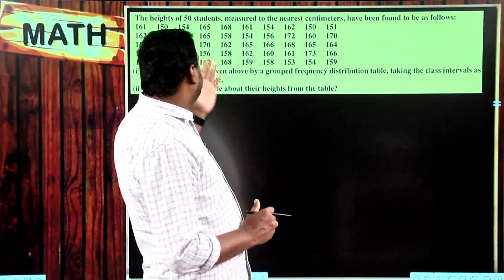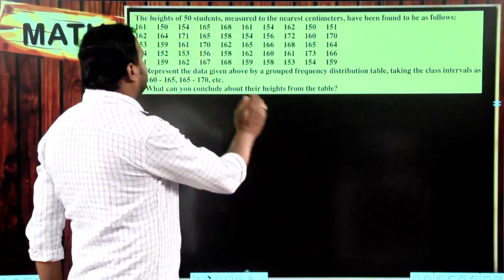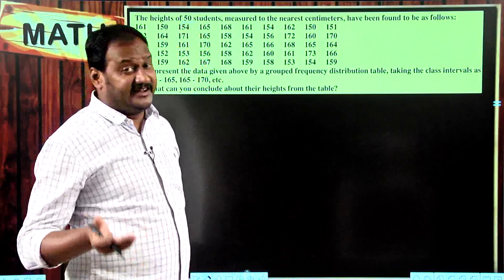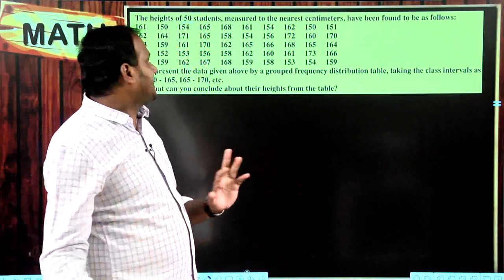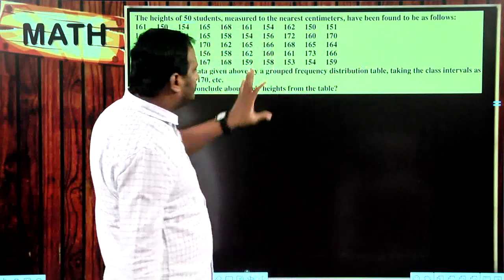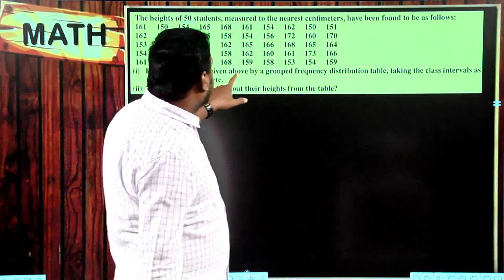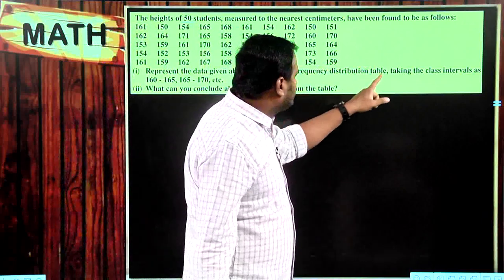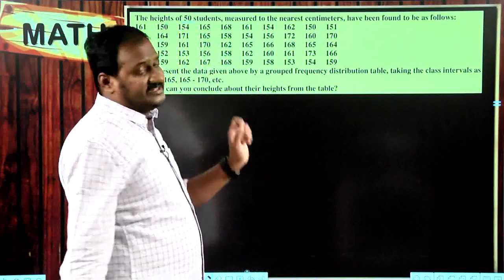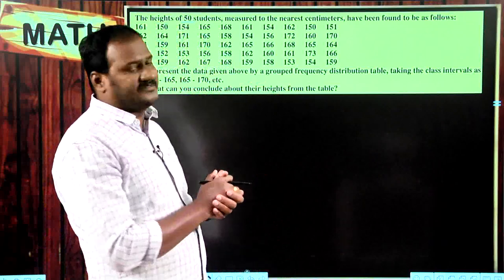Here you can see one problem: the heights of 50 students, measured to the nearest centimeters, have been found as follows. These are the heights of the students. Represent the data given above by a grouped frequency distribution table, taking class intervals as 160–165, 165–170, 170–175. What can you conclude about their heights from the table?